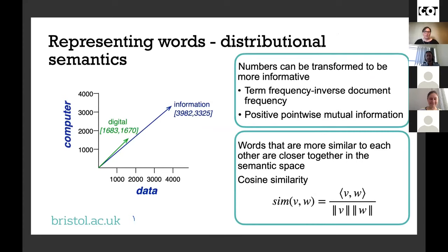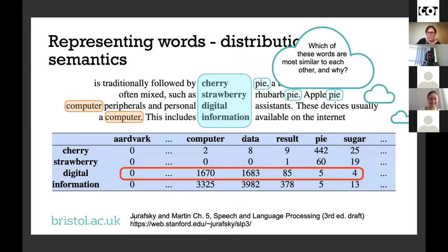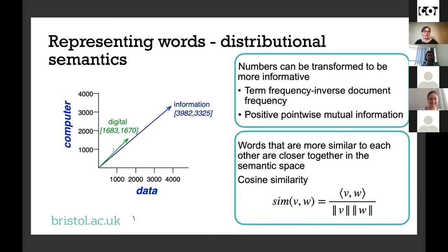If we plot digital and information on a two-dimensional space comprised of 'data' and 'computer' as basis words, we see that they point in the same direction. This is what we want — words that are more similar to each other are closer together in the semantic space. We measure similarity usually by cosine similarity — looking at the cosine of the angle between the vectors is the standard way of doing it. If your vectors are already normalized, this is just the inner product of the two vectors.